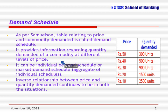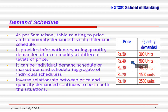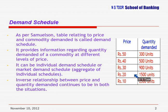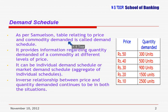For example, at rupees 50 per unit, the demand is 300 units. At rupees 40, that means at a reduced price, the quantity demanded is 500 units. At rupees 20, it is 1500 units. At rupees 10, it is 2500 units. So it is a table which relates price and quantity demanded, and it provides information regarding quantity demanded of a commodity at different levels of price.